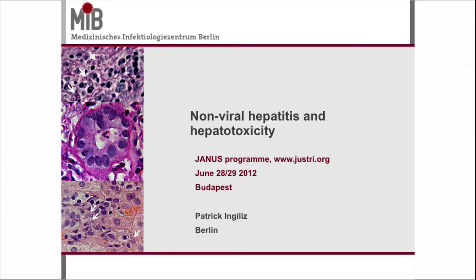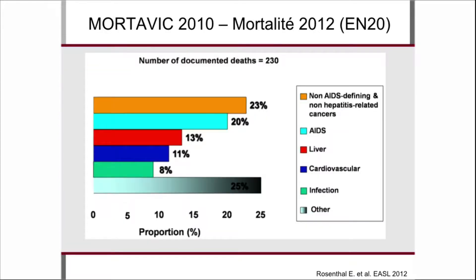I'm happy to talk to you today and happy to show you this slide. This is the French mortality registry in HIV patients. What you see here — the red bar — is liver disease. I'm showing you this to tell you that liver disease plays an important role in morbidity and mortality in HIV patients.